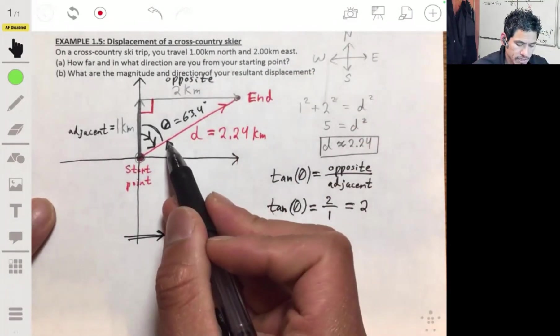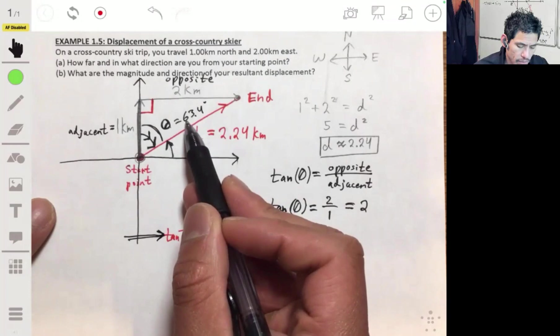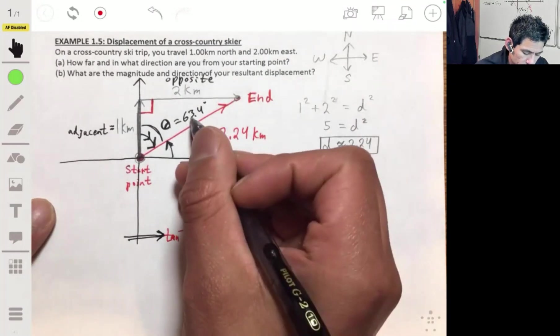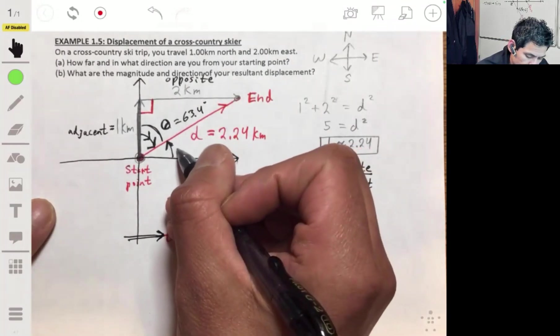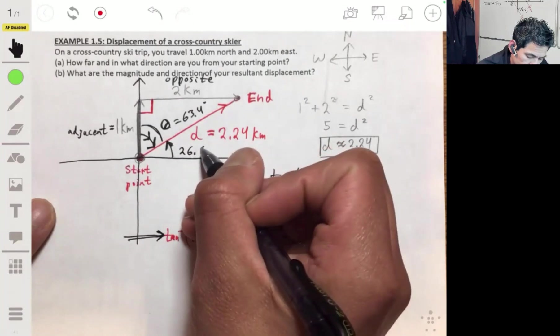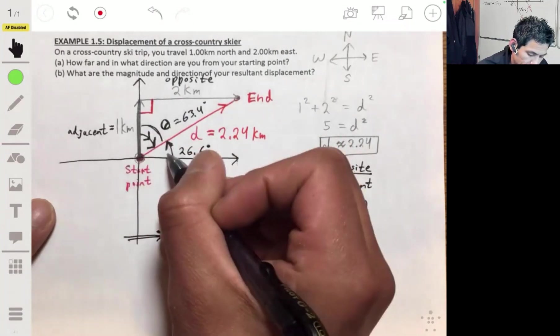So this is 63.4 degrees. And then that means that this angle will be 26.6 degrees, because these two angles have to add up to 90.